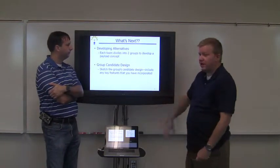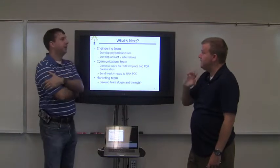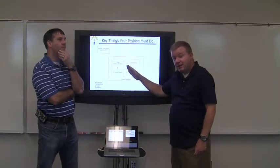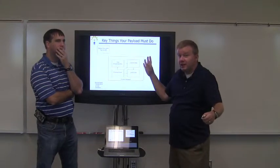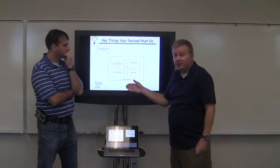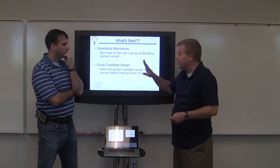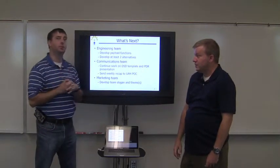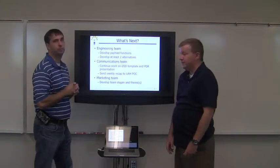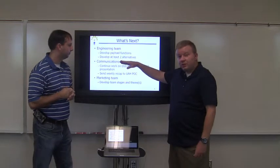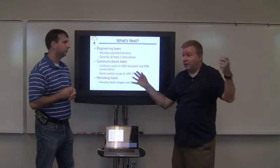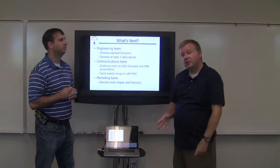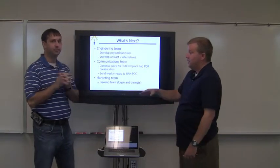So what's next for the three teams? Engineering team: the payload functions we gave you are the minimum things your payload has to do. You might have some unique stuff you need to add. Make sure you've got all the functions labeled — for example, if you have an impactor that's going to create a lot of dust, that's a totally new function: create dust. Then develop at least two alternatives. If you've got a lot of good ideas, write them all down right now — there's no crazy solution. Get them all on paper and we can start talking about them because something neat will just pop up through brainstorming.